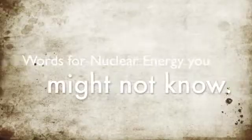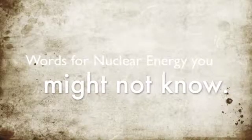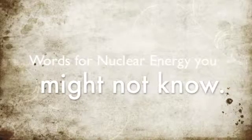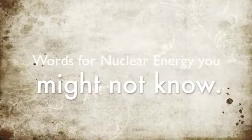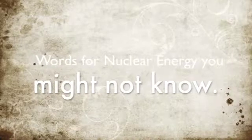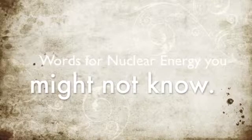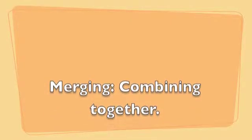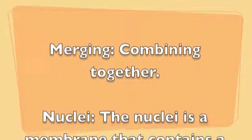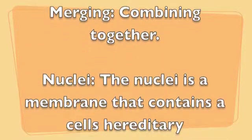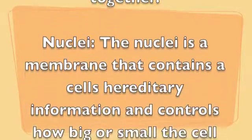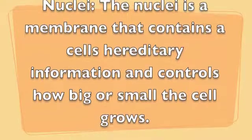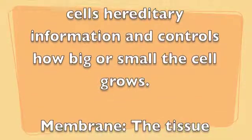Words for nuclear energy you might not know. Merging: combining together. Nucleus: the nucleus is a membrane that contains hereditary information and controls how big or how small the cell grows. Membrane: the tissue surrounding the cell.